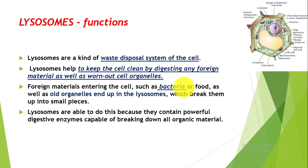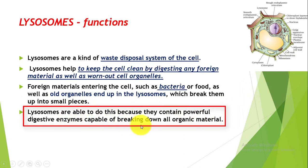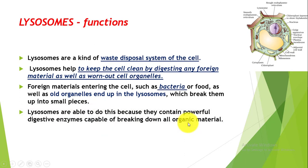Aisa kaise kar pata hai? Kaise ye waste disposal hota hai? Kaise ye digest kar leta hai old organelles ko, as well as the worn out and foreign material ko? Because they contain powerful digestive enzymes that are capable of breaking down all organic material. Digestive enzymes of many types are present inside it.